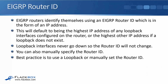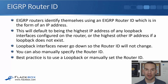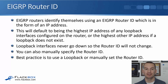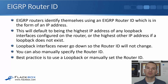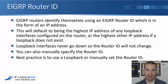The last thing to cover is the router ID. EIGRP routers identify themselves to other EIGRP routers using a router ID in the form of an IPv4 address. By default, it will be the highest IP address of any loopback interfaces configured on the router. If there are no loopbacks, it will be the highest IP address on a physical interface. You want the router ID to be stable and not change, since this is how the router identifies itself to other EIGRP routers. It's recommended to use a loopback interface or to manually specify the router ID.